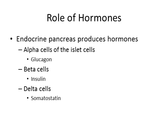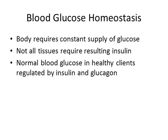Our bodies require a constant supply of glucose. Glucagon's major action is to increase blood glucose by converting glycogen to glucose in the liver. Somatostatin lowers blood glucose by interfering with the release of growth hormone from the pituitary and glucagon from the pancreas. The key point is understanding what raises and what lowers blood glucose, as that's what we need to know as nurses. Normal blood glucose in healthy clients is regulated by insulin and glucagon and ranges from about 70 to 110.